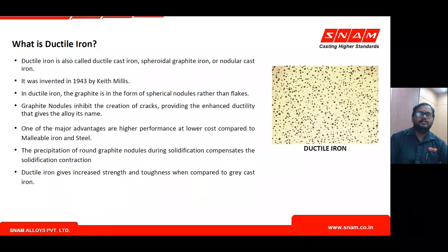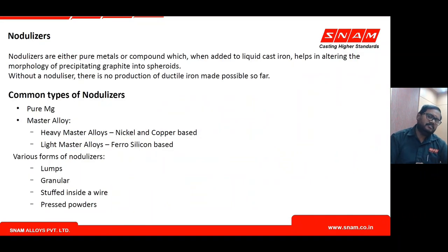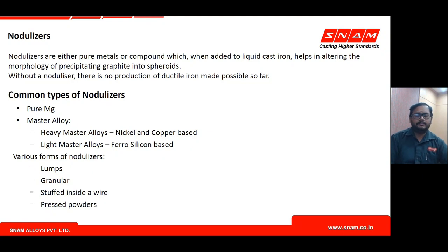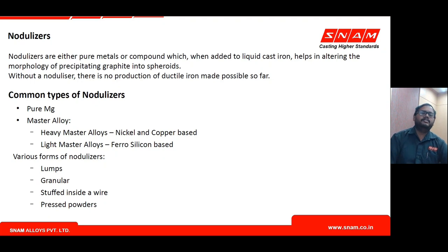Nodulizers are either pure elements, alloys, or compounds which, when added to ductile iron, help in converting the morphology of precipitating graphite into round spheroids. Without a nodulizer, no ductile iron production has been evidenced so far — you definitely need a nodulizer in some form to produce ductile iron.